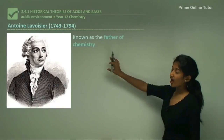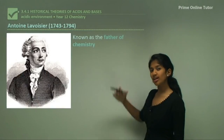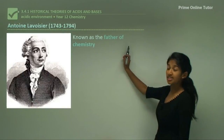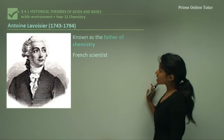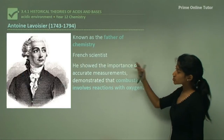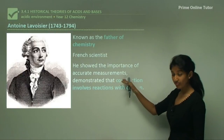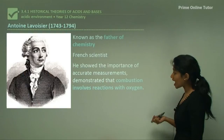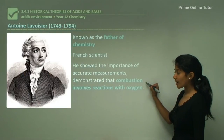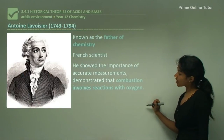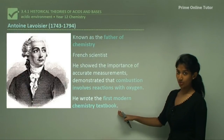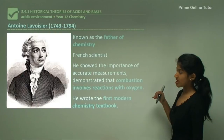Now let's look at how acids and bases were classified using chemistry. Firstly, we have Lavoisier, who was known as the father of chemistry. He was a French scientist who showed the importance of accurate measurements, that combustion involves a reaction with oxygen, and he wrote the first modern chemistry textbook.